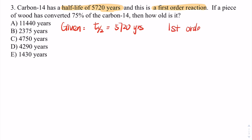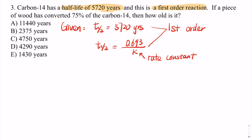For first order reactions, the half-life equals 0.693 divided by k, where k represents the rate constant. That's the important information we know because it's first order.